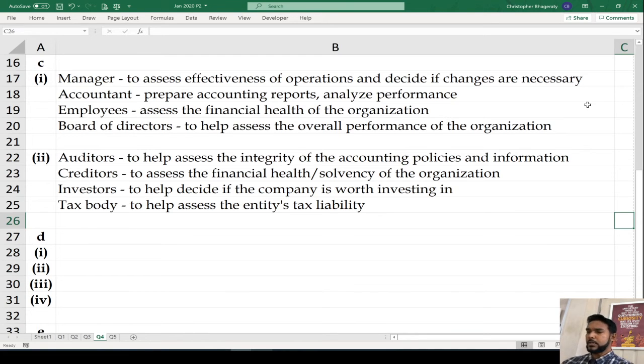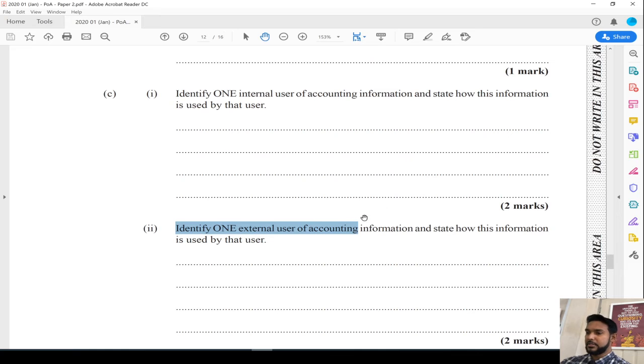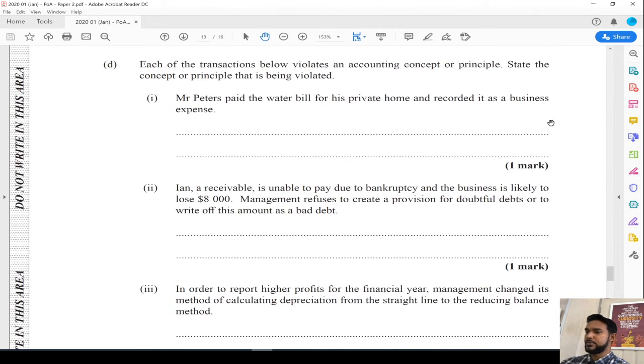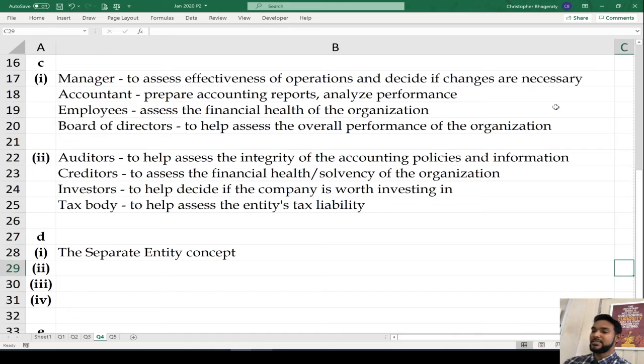Part D: Each of the following transactions violates an accounting concept or principle. State the concept or principle being violated. Mr. Peters paid the water bill for his private home and recorded it as a business expense. When the owner uses resources from the business for personal use, that's drawings. That violates the separate entity concept or business entity concept, which says the business is seen as a separate legal entity from its owners, so accounting records must be kept separate.